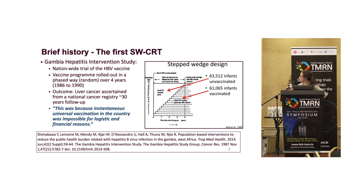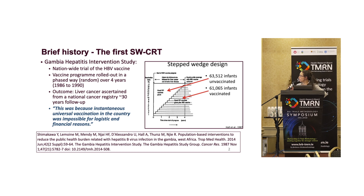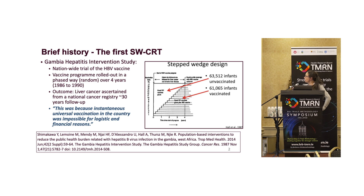The diagram here shows the 17 regions of the Gambia — the entire country participated. And over a period of about four years, each of the regions was gradually and randomly rolled out so that when that region was rolled out to deliver the vaccine program, all of the babies in that particular region were offered the vaccine. It ended up with about 60,000 babies in the intervention arm and 60,000 babies in the control arm. They justified their study design because there was no other way to provide instantaneous and universal vaccination in the country due to logistical problems.